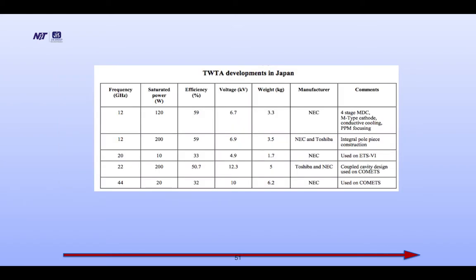TWT development in Japan: for 12 GHz, the saturated power is 120 W, efficiency is 59%, voltage is 6.7 kV, and weight is 3.3 kg. The manufacturer is NEC — Nippon Electronics Corporation. Comments: 4-stage MDC, M-type cathode, conductive cooling, and PPM focusing. Another specification for 12 GHz is also listed.